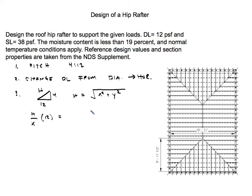Once you've amplified the dead load to a horizontal projection, you add the dead and snow loads together. I'll be using the ASD dead plus snow load combination, so that's the fourth step — just add them up. The fifth step is to find the area of influence for the hip beam.